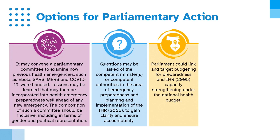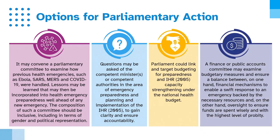Parliament could link and target budgeting for preparedness and IHR capacity strengthening under the national health budget. A finance or public accounts committee may examine budgetary measures and ensure a balance between, on the one hand, financial mechanisms to enable a swift response to an emergency backed by the necessary resources, and, on the other hand, oversight to ensure funds are spent wisely and with the highest level of probity.